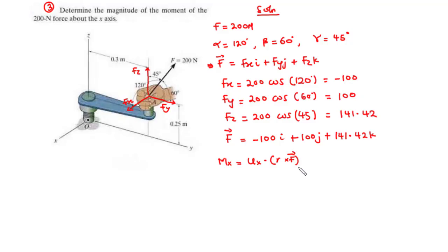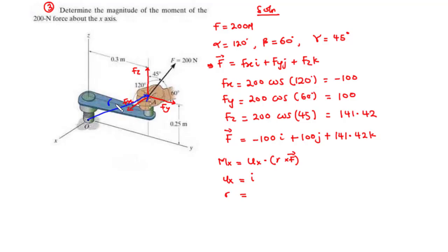Now that we have the values of F, let's find u_x and then r. Since we want to find the moment about the x-axis, the unit vector directed along the x-axis is i, so u_x equals i. For r, it represents the position vector directed from O to any point on the line of action of F, so we can use position vector OA, calling it r_a.